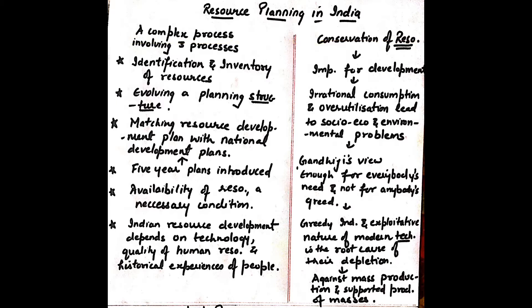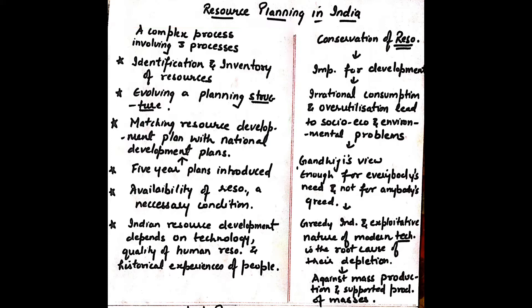It has three processes. First one is identification and inventory of resources. Second is evolving a planning structure. Third is matching resource development plan with national development plans. In order to make these three processes effective, the five-year plan was introduced after India achieved independence.